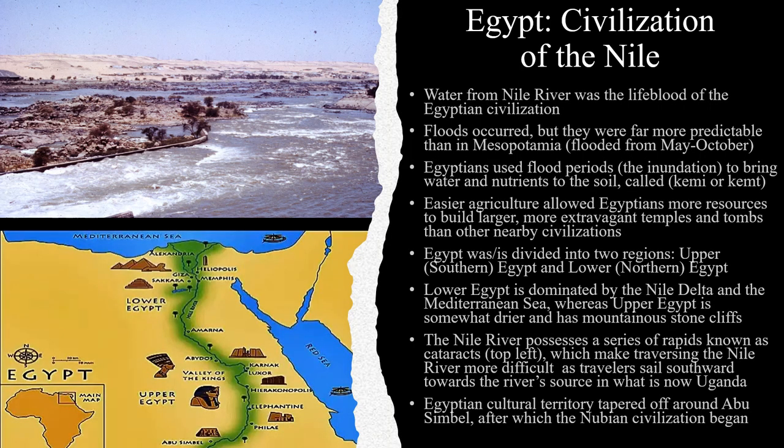Put simply, ancient Egypt was the civilization of the Nile River. The Nile River was the lifeblood of the Egyptian civilization. It provided water, hydration, and transportation. The Nile River would flood, but its floods were far more predictable than the floods of the Tigris and the Euphrates rivers in Mesopotamia.